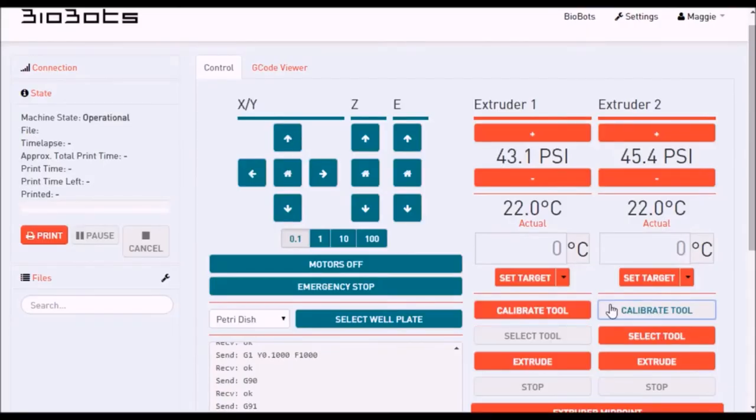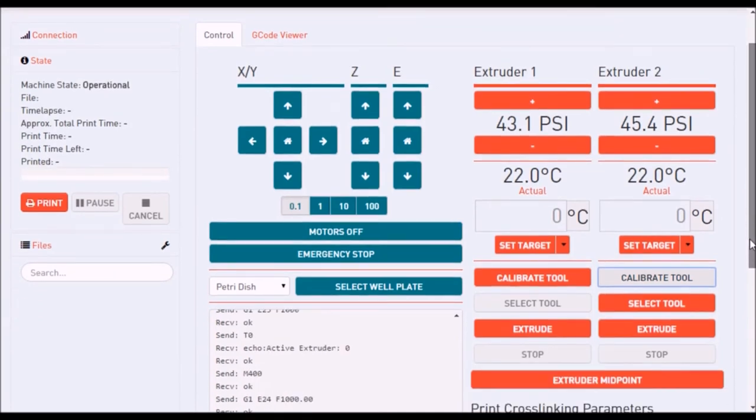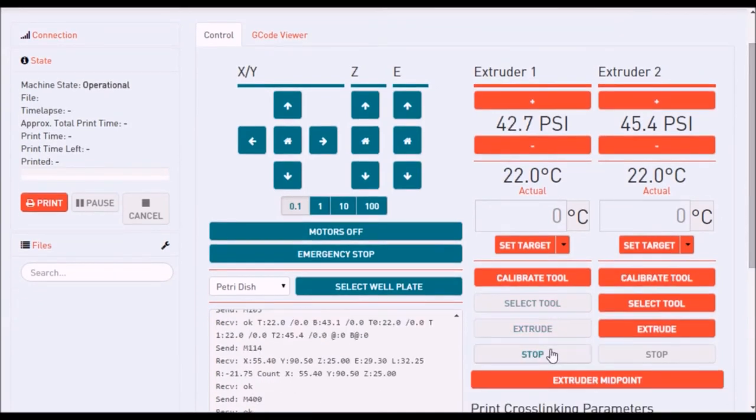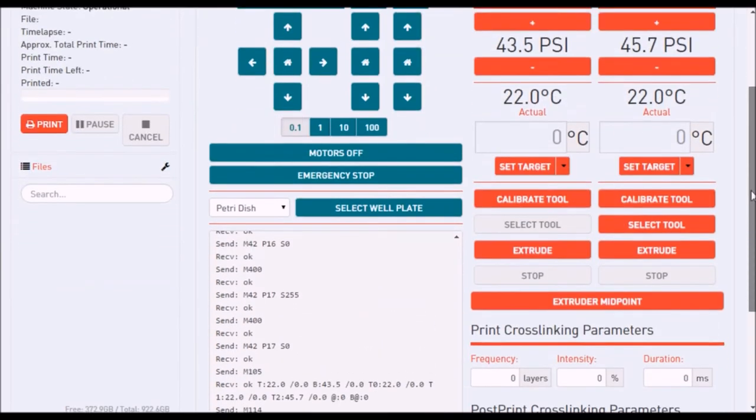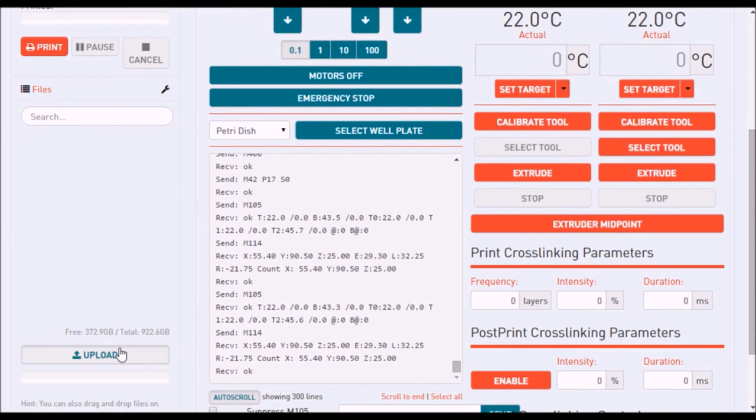Next, calibrate the second extruder, then test each extruder to test the pressure settings. Adjust the pressure if necessary, then upload your G-code file and press Print.